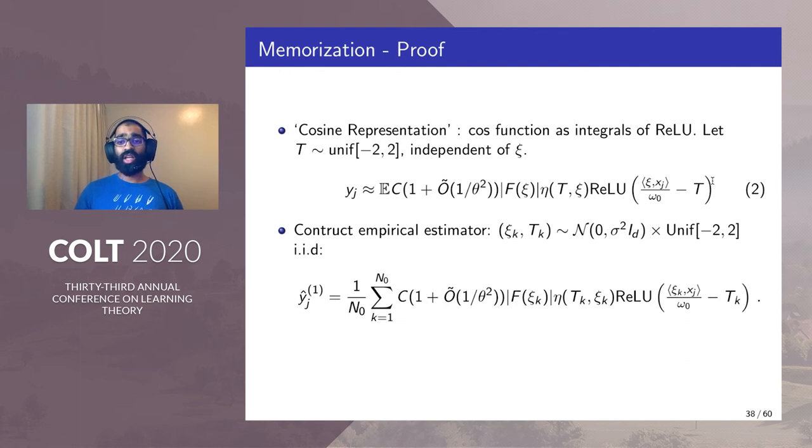Since we have an equality in expectation we can always construct an empirical estimator by sampling ξ_k and t_k and n out of these independently at random and constructing the following empirical estimator.